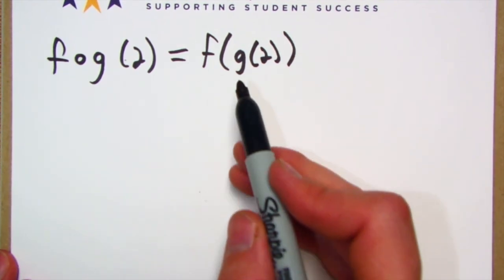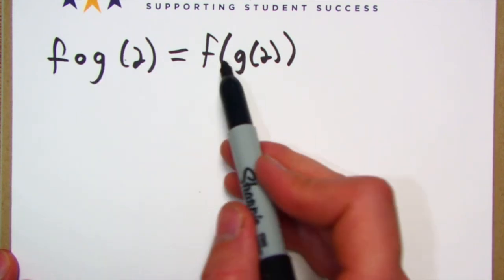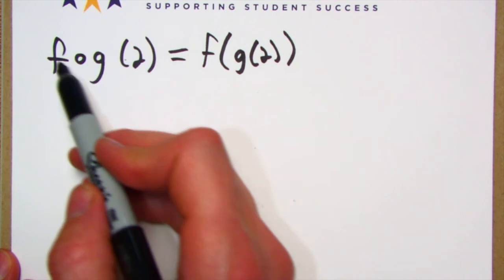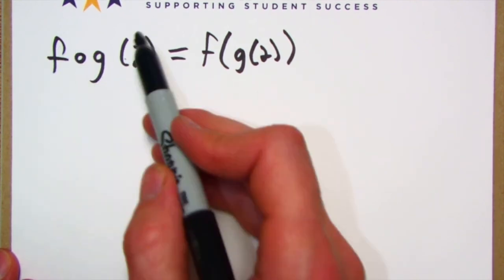All right, that's all you really need to know about them. f of g of 2 written like that is the same as f of g of 2 written like this. The later one is the inside function and the earlier one is the outside function.